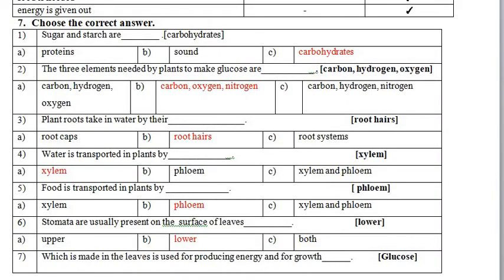Now for the MCQs, the last section of this chapter. First statement: 'Sugar and starch are __.' During respiration, food is converted into energy and glucose is converted into carbohydrate. Proteins and sounds are not linked with these biomolecules. The correct option is carbohydrates. Next: 'The three elements needed by plants to make glucose.' These three elements are carbon, hydrogen, and oxygen.